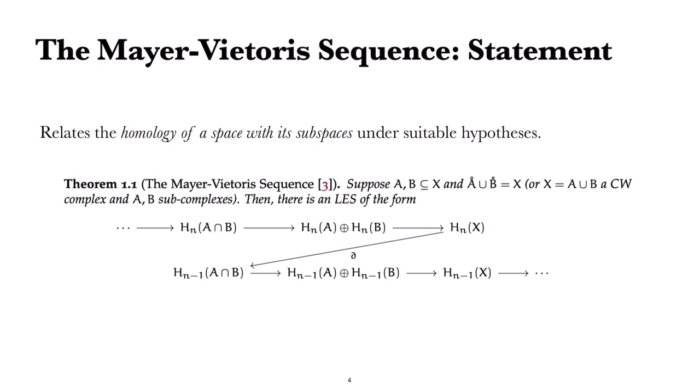We have A and B as subspaces of the space X so that the union of the interiors equals X. We can also have X as a union of subcomplexes. Then we have a long exact sequence of this form relating the homology of the intersection, the direct sum of the homology of two spaces, and the homology of the entire space.